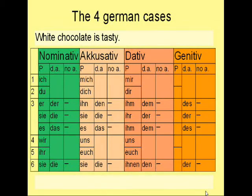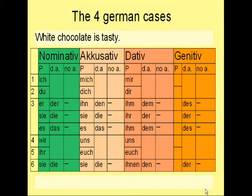Let's take this sentence: 'White chocolate is tasty.' Tasty means Lecker in German. Chocolate means Schokolade and is a feminine noun. And as you learned in my lesson about German colors, white means Weiß in German. Now look for the subject of the sentence, which is 'the white chocolate,' so white chocolate is in the nominative case.